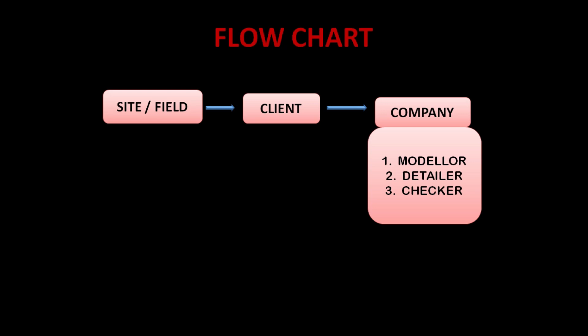After detailing, the drawings are sent to the checker. The checker verifies whether the modeler and detailer have given proper dimensions and used proper materials. If there is anything wrong in the model, the checker sends it back to the modeler for corrections. If there is anything wrong in the detailing, the checker sends the detailing drawings back to the detailer for corrections.